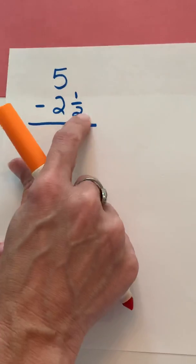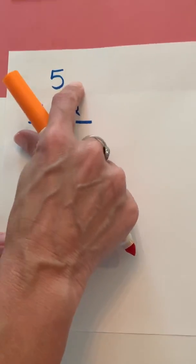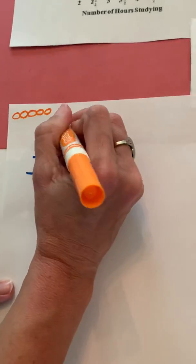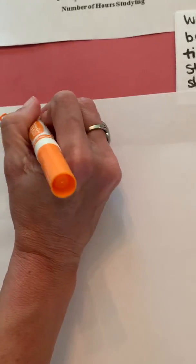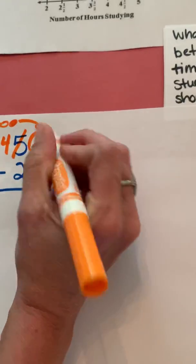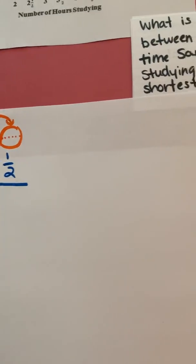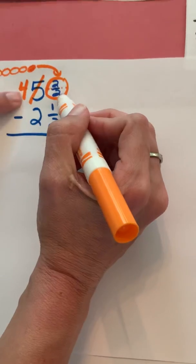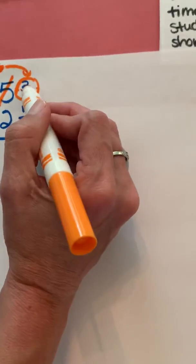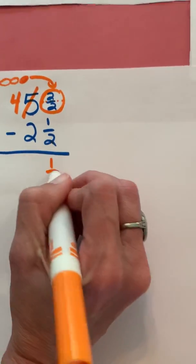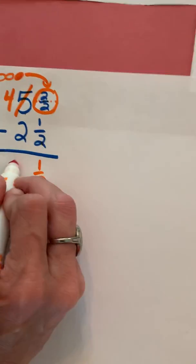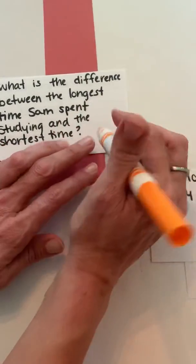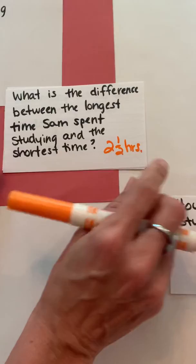Now remember, I cannot take a half from nothing. There's nothing there. So I have to regroup. I have to go to my whole number, and imagine that these are five wholes, okay? And I'm going to regroup one of the wholes, and so I'm going to take this whole, and I'm going to move it over here, but I'm going to break it in half. So it is going to be two halves, okay? So, because that's really a whole, there's my four wholes. That gets me back to my five wholes. So a half from two, or from two halves, it's going to be one half, and then two wholes taken away from four wholes will leave me with two wholes. So what is the difference between the longest time Sam spent studying and the shortest time would be two and a half hours. Make sure we always put our units.